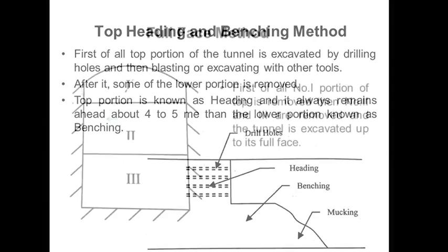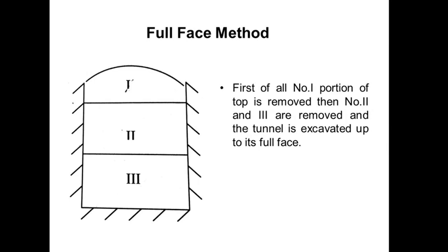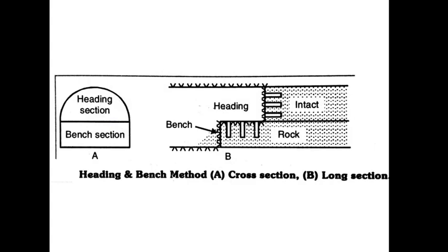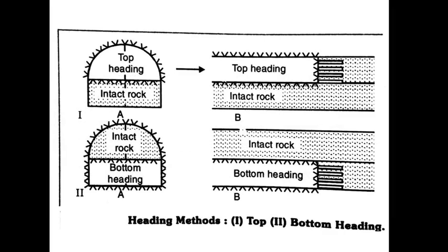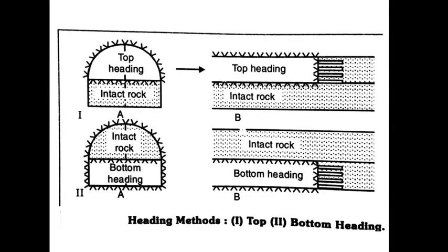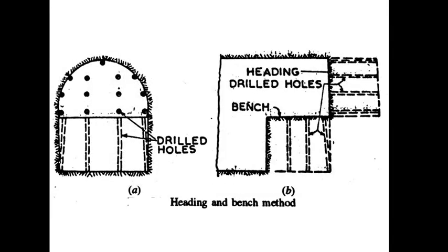The full face method excavates the tunnel up to its full face simultaneously. In top heading and benching, first the top portion of the tunnel is excavated by drilling holes and blasting, then the bottom portion is excavated. Heading is the top section and benching is the bottom section. Image A shows the heading section excavated first, followed by the bench section, with top heading in intact rock and then bottom heading.